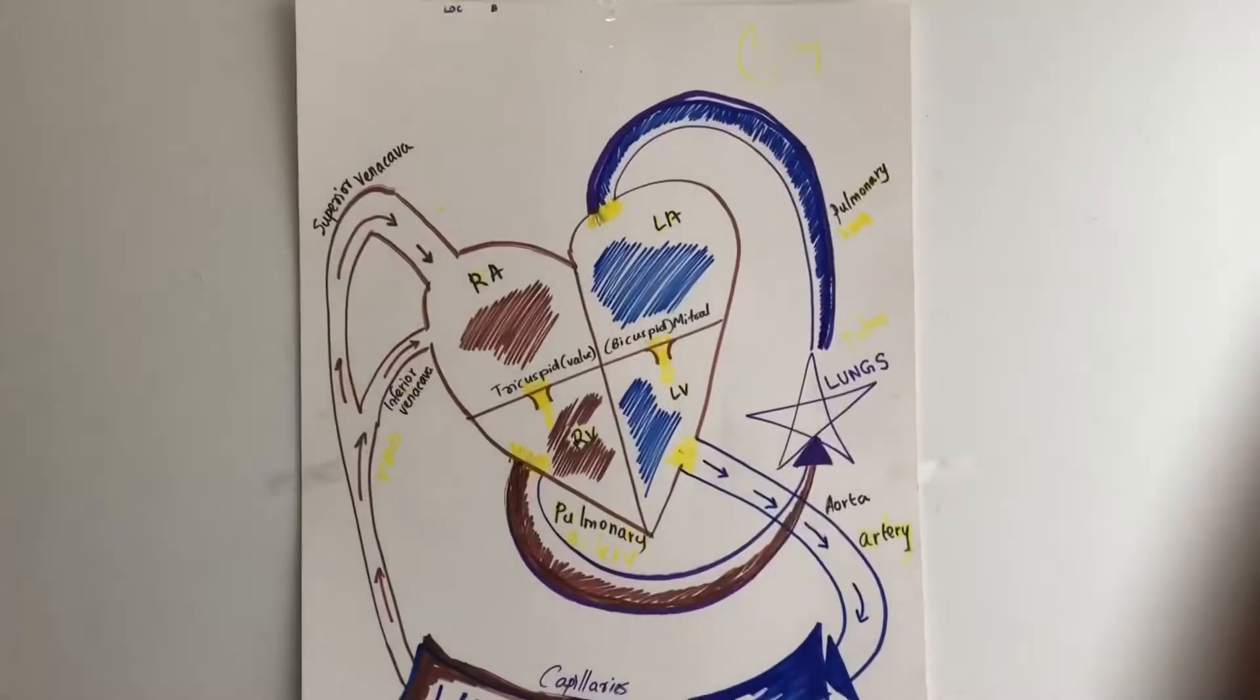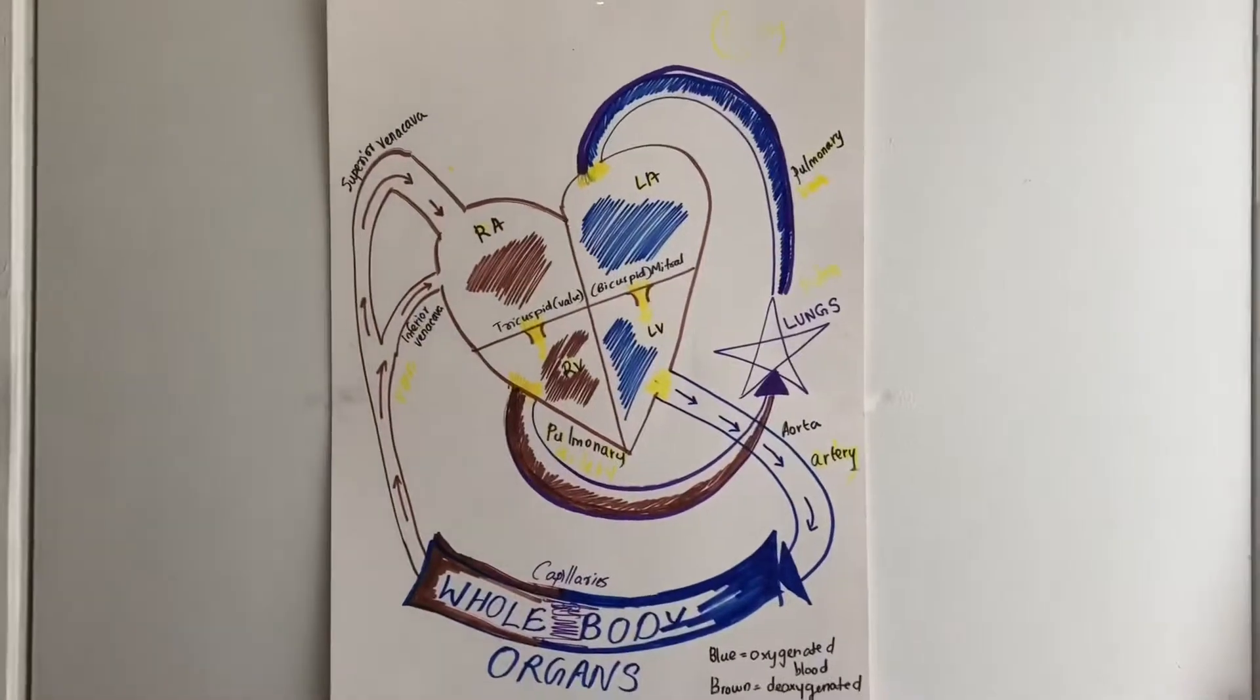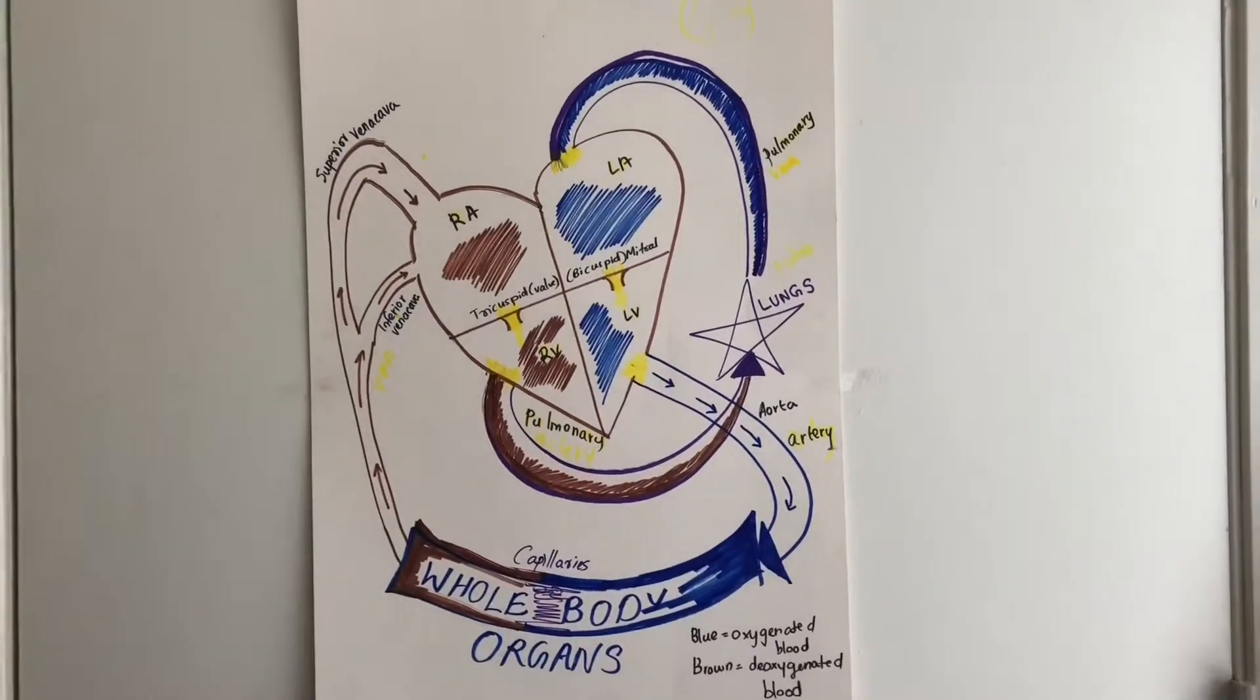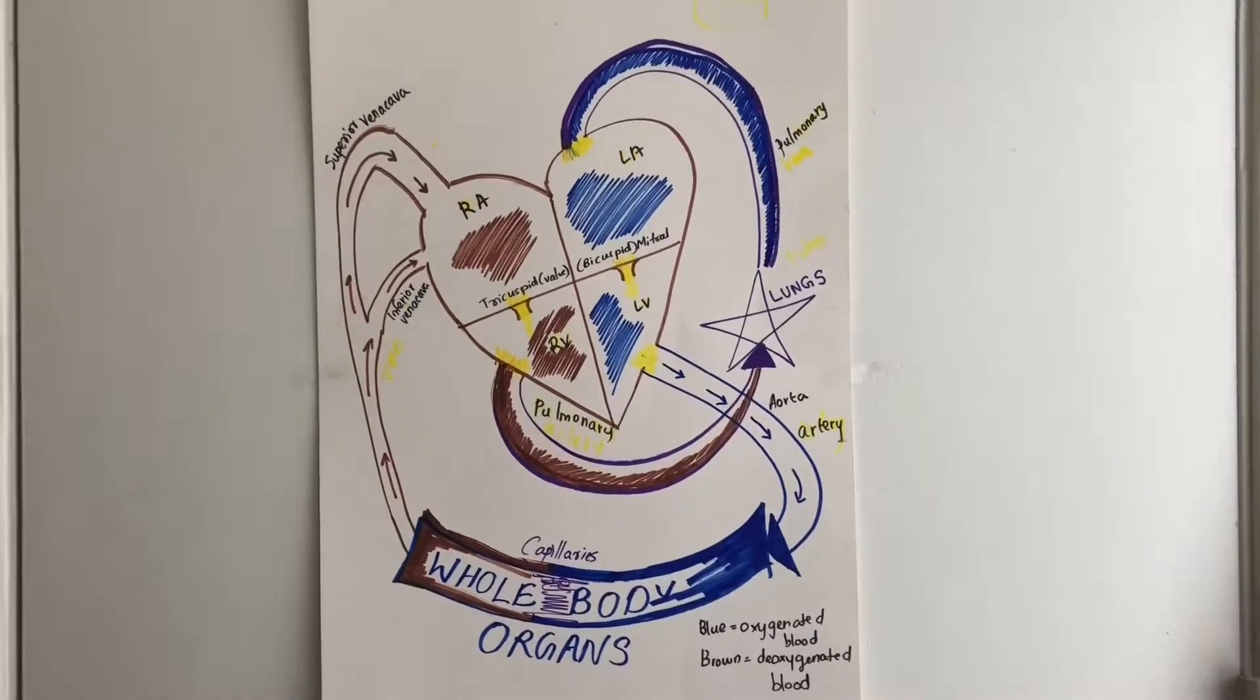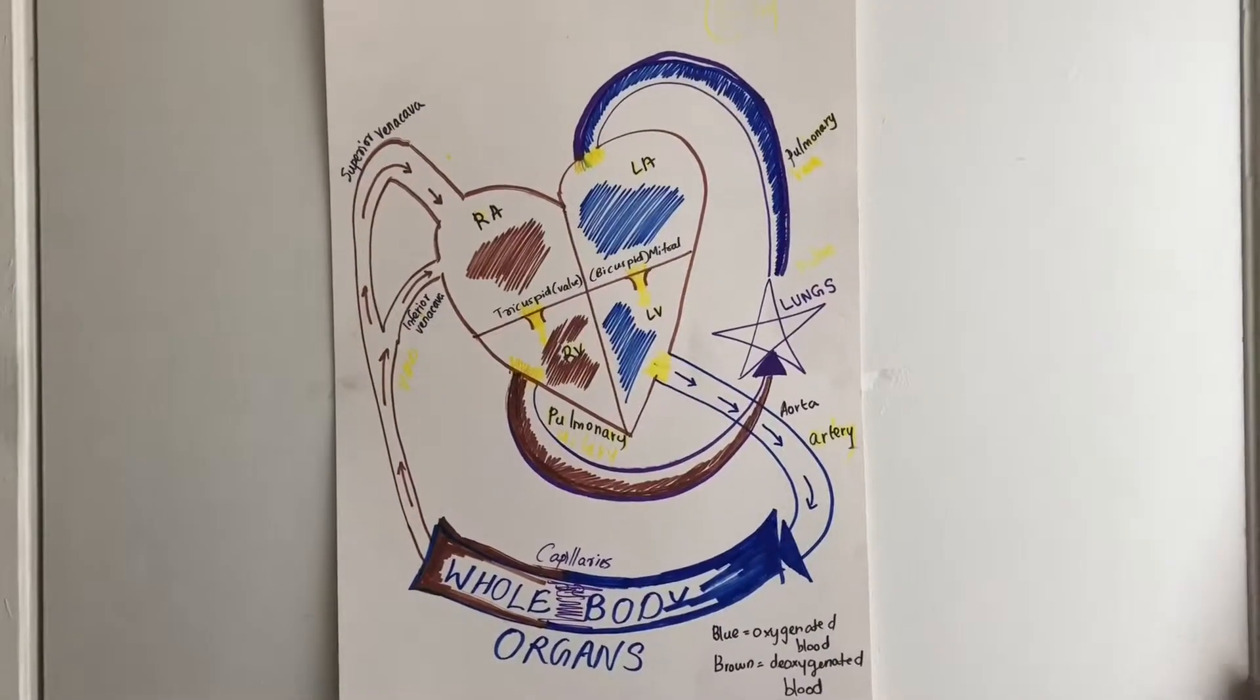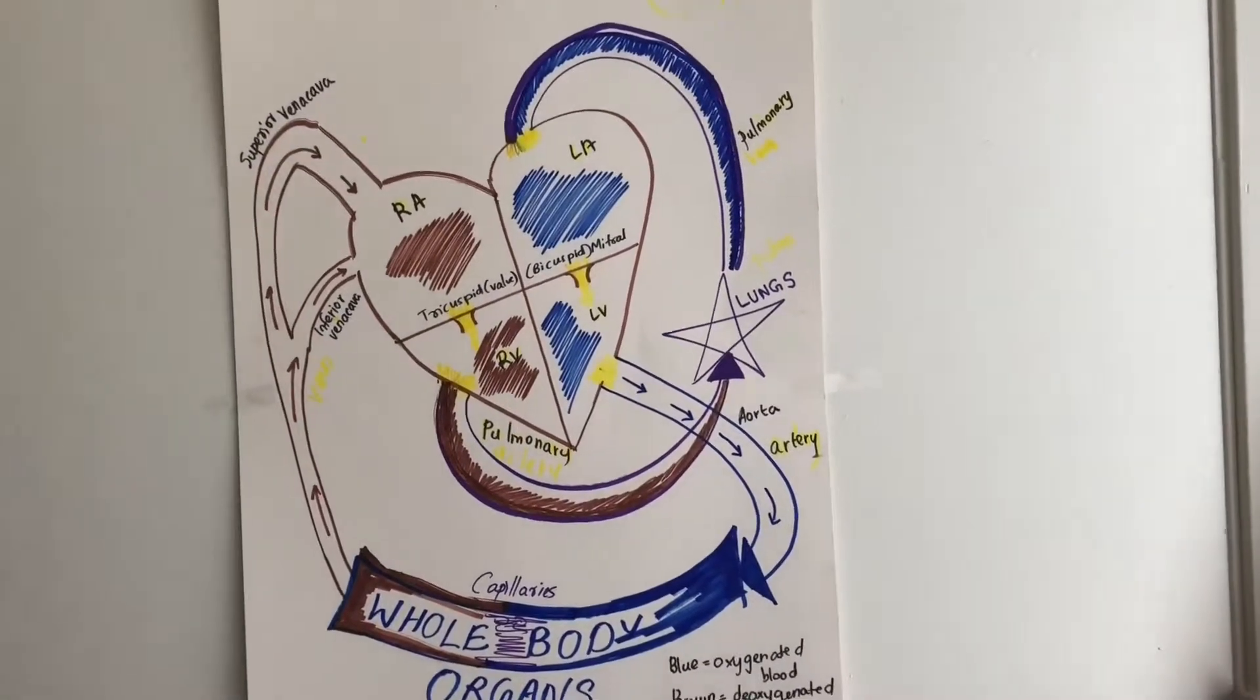The blood without oxygen from the body goes to the right atrium, through the tricuspid valve, to the right ventricle. In the right ventricle, blood goes through the pulmonary valve into the pulmonary artery.